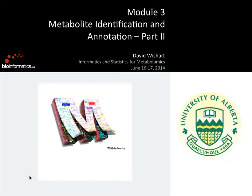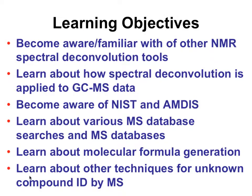This is part two of Metabolite ID and annotation. What it's now going to do is go from the idea of this manual approach to some of the other automated approaches with NMR. Then we're going to drift into GCMS and talk more about MS methods — mass spectrometry, identifying compounds by mass, molecular weight, formula generation, and other ways of identifying unknowns using largely mass spectrometry techniques.